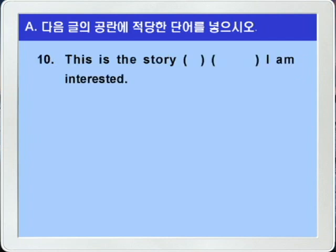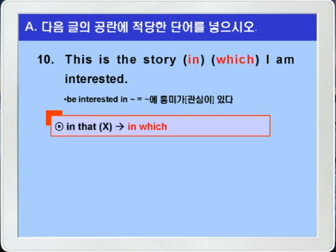10번입니다. 'This is the story blank, blank I am interested.' 형용사 interested는 be 동사와 함께 쓰일 때는 반드시 'be interested in' 이런 형태로 '뭐뭐에 흥미가 있다'라는 뜻인데 interested 다음에 전치사 in이 보이지 않죠? 따라서 전치사 in이 관계대명사와 함께 앞으로 나갔다는 것을 알 수 있습니다. 선행사가 the story, 즉 사물이니까 which 혹은 that을 쓸 수 있겠지만 that은 'in that' 이런 형식으로 쓸 수 없다고 했죠? 그래서 which를 사용해서 in which가 정답이 되겠습니다.